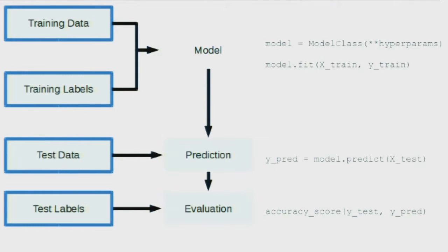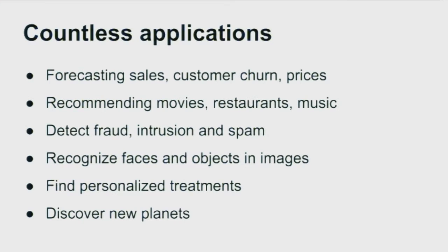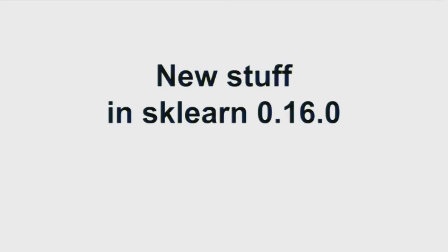This is the scikit-learn API, basically. There are many different model classes, but they tend to follow a very similar API so that you can try to switch them and see how it goes and compare their accuracy. You have many applications. I skipped that. You know probably about that.